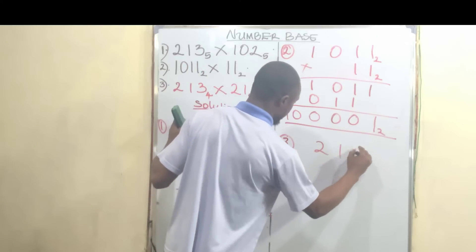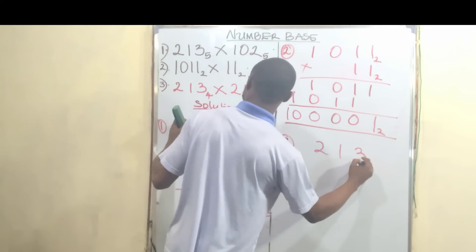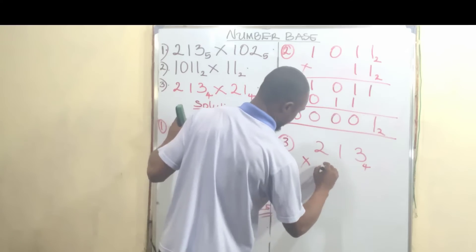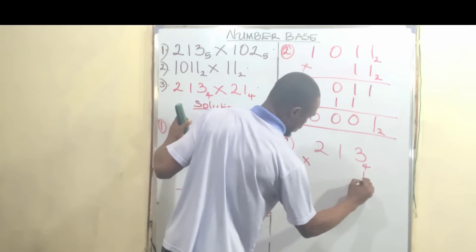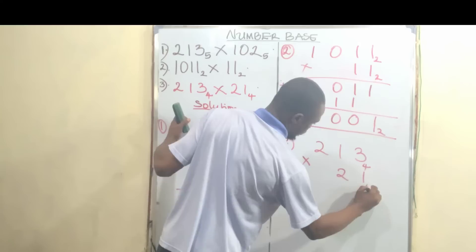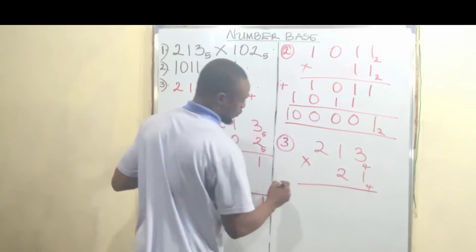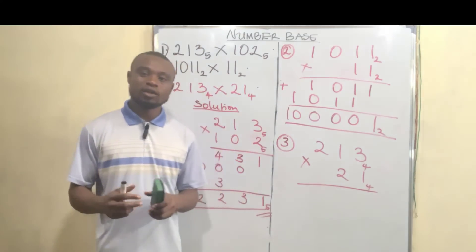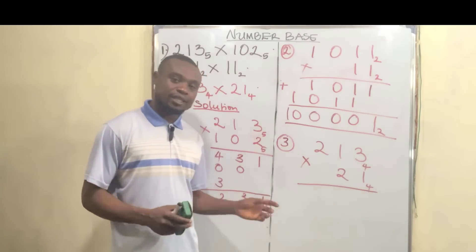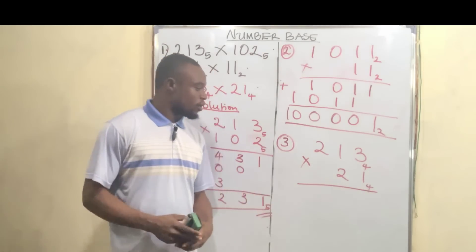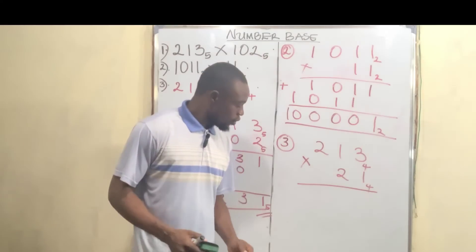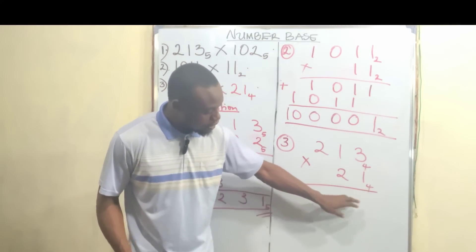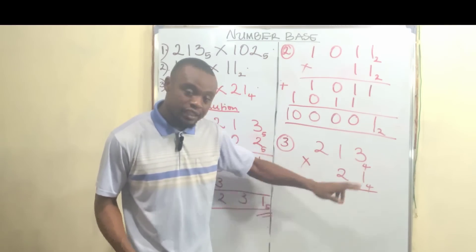Finally, the last one — number 3 — which is 12213 base 4, multiplied by 21 base 4. The base 4 digits are 0, 1, 2, and 3; the highest number in base 4 is 3. So let's do this multiplication.